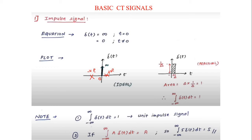The most important signal is the impulse signal, also called the Dirac delta function. The standard notation for the impulse signal is δ(t). Going forward in further videos, whenever I write δ(t), you should understand that as the impulse signal — I will simply write the notation rather than saying 'impulse signal' each time.